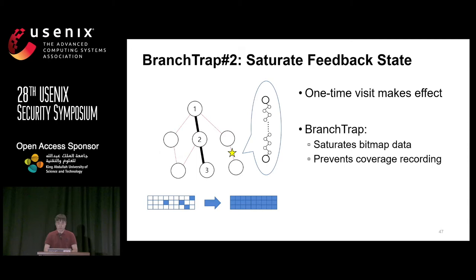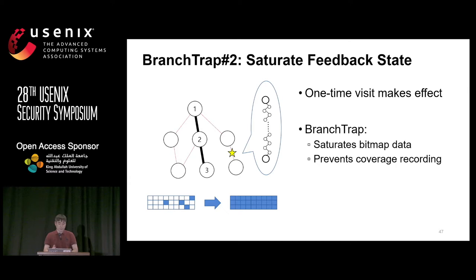Branch trap number two tries to saturate the feedback state. It consists of a huge number of deterministic branches, installed in rarely executed paths, and can take a long time — several hours or days — to trigger. Once the fuzzer visits this location, it suddenly saturates the coverage bitmap. After saturation, the fuzzer will not discover new interesting inputs because all coverage is marked as visited.